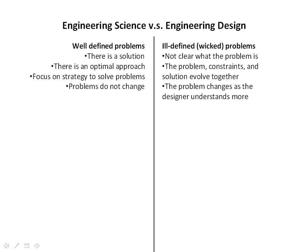Engineering design, on the other hand, tends to deal with what are called ill-defined or often wicked problems. These are characterized by it never being really clear exactly what the problem is — it's hard to say exactly what the problem is. The problem, the constraints, and the solution tend to evolve together. In other words, if you come up with a solution, the problem may look completely different, and a new solution may be necessary.